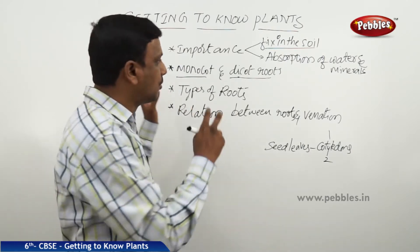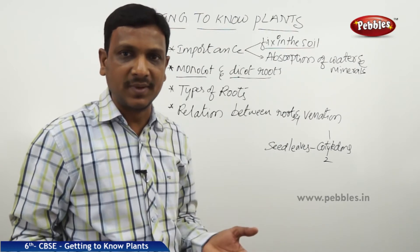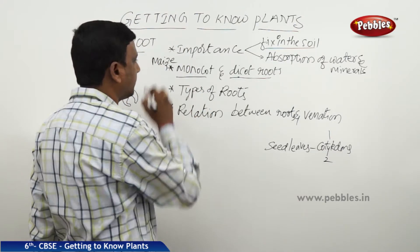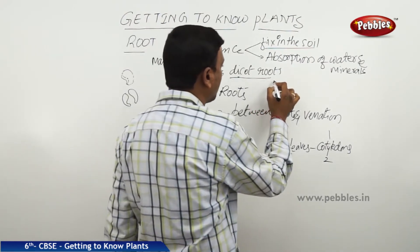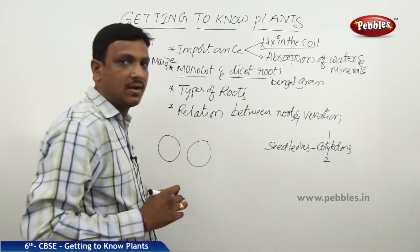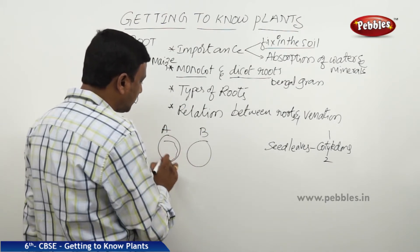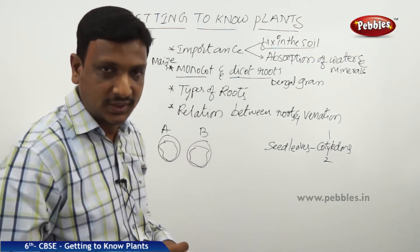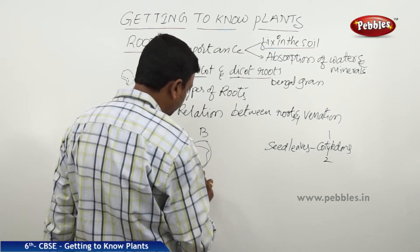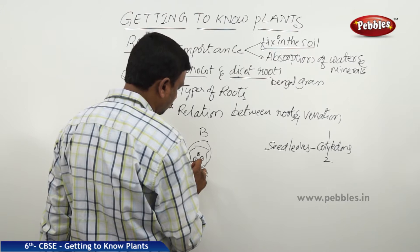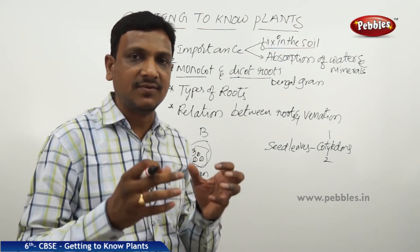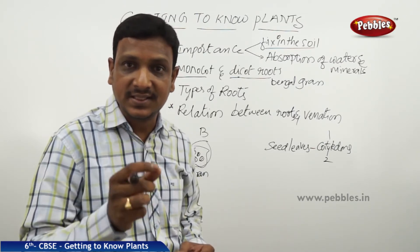So why are we talking about this when discussing roots? Because there is a relation. In an experiment, we have taken monocot seeds — for example, maize — and dicot seeds — for example, Bengal gram. We placed them in two small bowls named A and B, spread wet cotton, sprinkled water, and soaked the seeds overnight. Then we found the seeds started sprouting.